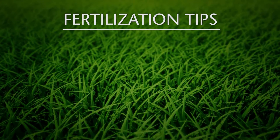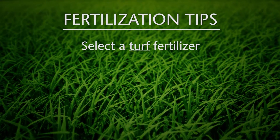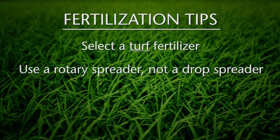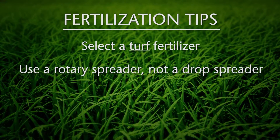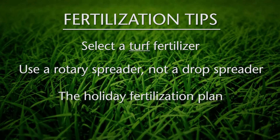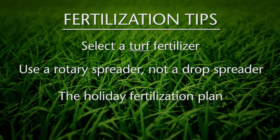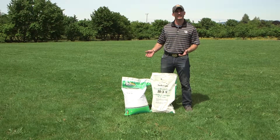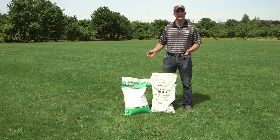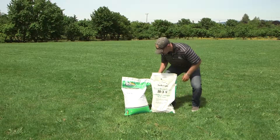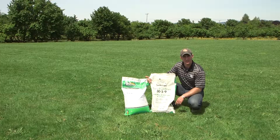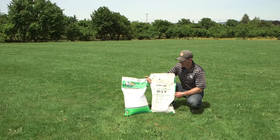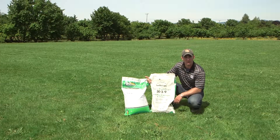The second of the three primary cultural practices is fertilization. The three tips we'll discuss today are: first, select a fertilizer designed for turf; secondly, use a rotary spreader and not a drop spreader; and finally, the holiday fertilization plan. Tip one is selecting a fertilizer for turf grass. If we take a look at this bag of fertilizer here, we see it's clearly labeled turf fertilizer.